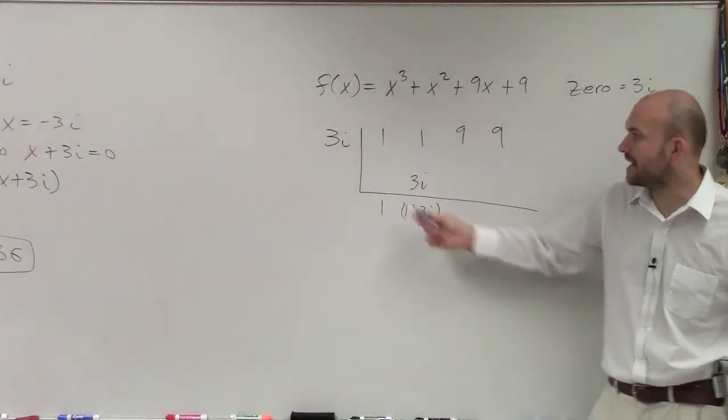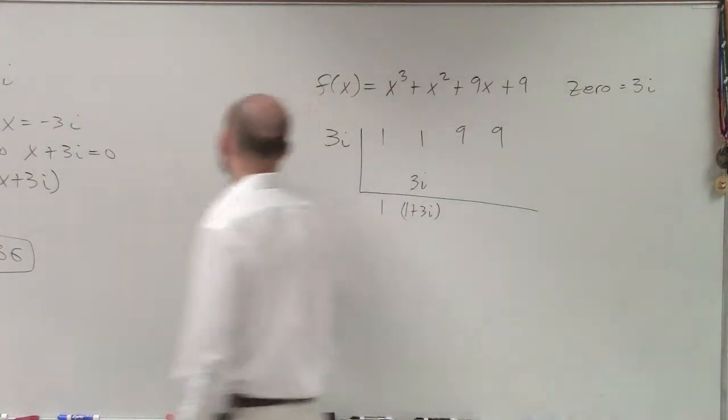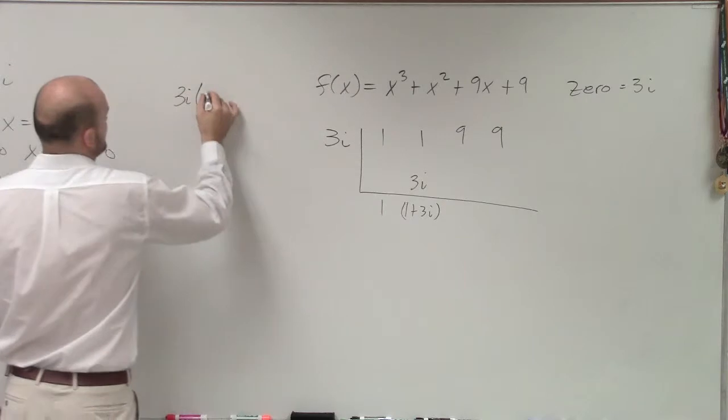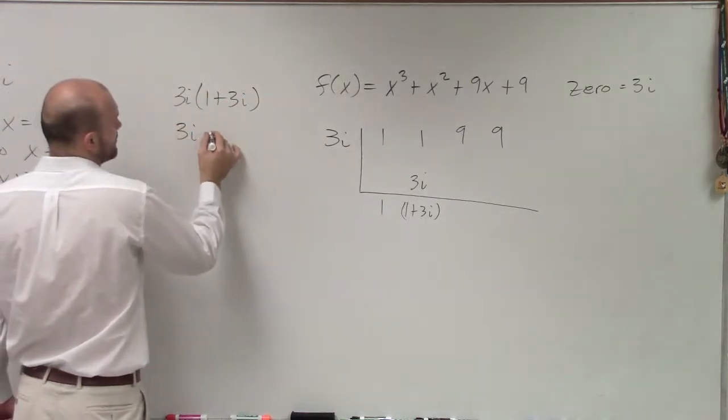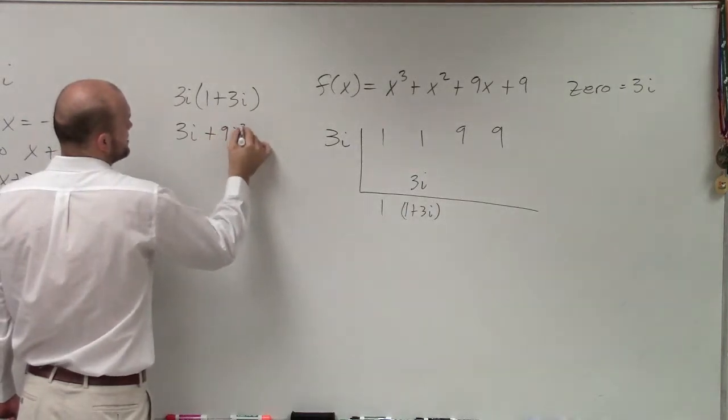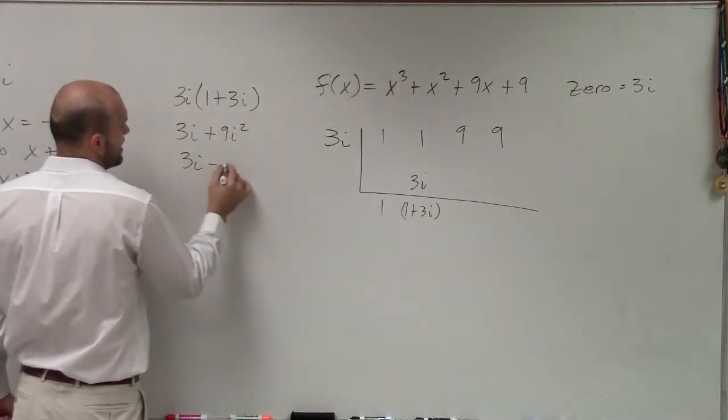One plus 3i times 3i, let's just do it over here just so you guys can remember the multiplying of the products. That becomes 3i plus 9i squared, which would be 3i minus 9.